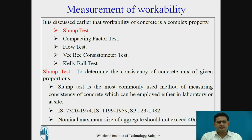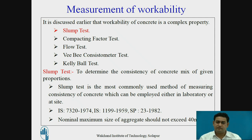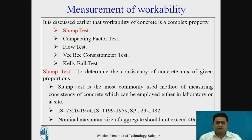In today's session we are going to discuss the slump test. To determine the consistency of the concrete mix of given properties, the slump test is the most commonly used method of measuring the consistency of concrete, and can be employed either in the laboratory or at the site. The relevant IS codes define the specifications for the apparatus and the steps to carry out the slump test. The nominal maximum size of aggregate should not exceed 40 mm for the slump test.